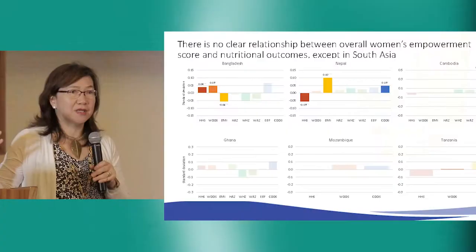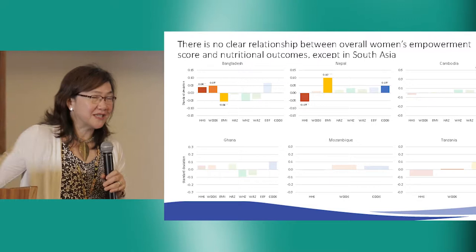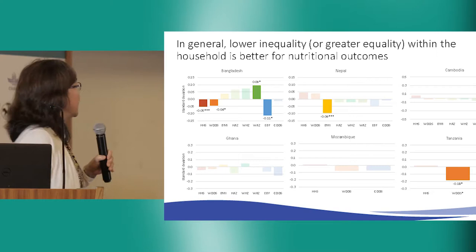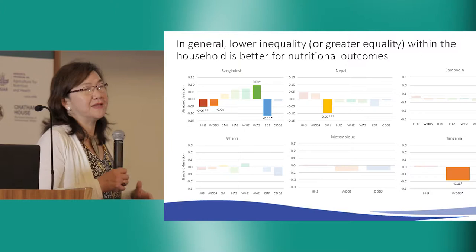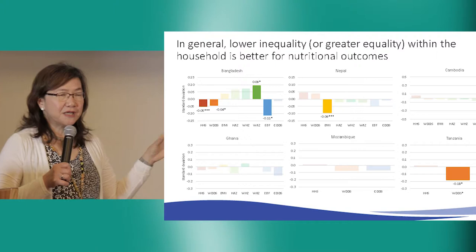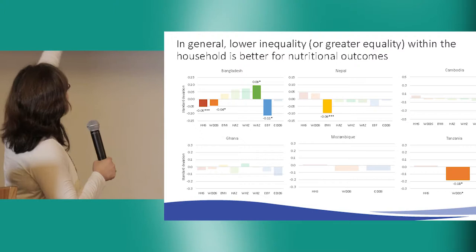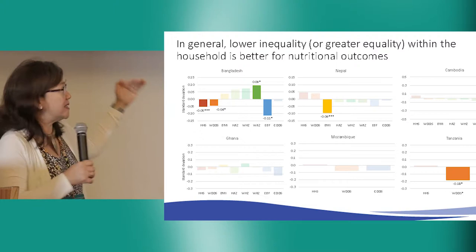We do find improvements in nutritional outcomes in South Asia, but not for all outcomes — so the prediction that you won't see the same pattern everywhere holds. What is interesting is that in general, lower inequality or greater equality within the household is better for nutritional outcomes. The indicator is scored such that a bigger gap is bad, so you want to see more things below the zero line.